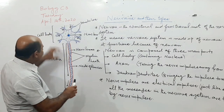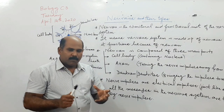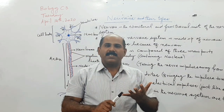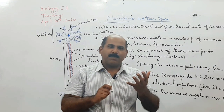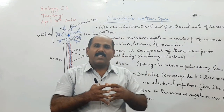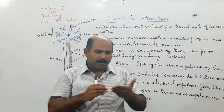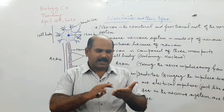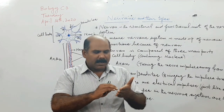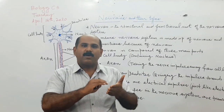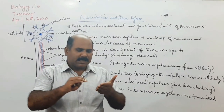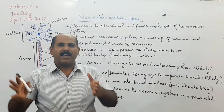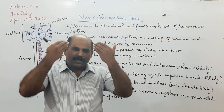Now comes another very important term: the nerve impulse. The nerve impulse is basically a type of electrical signal. Just as electricity passes through wires, nerve impulses pass through neurons, and because of these nerve impulses, signals travel from one part to another part in the nervous system.